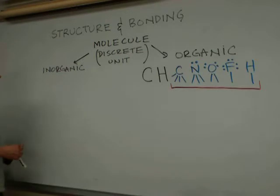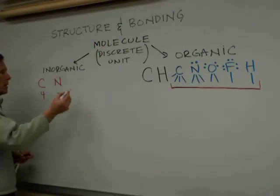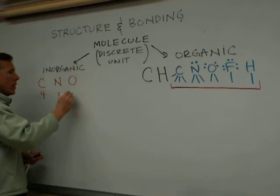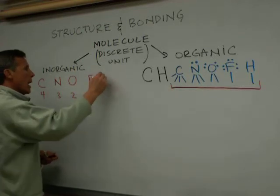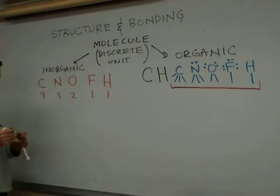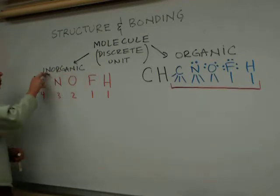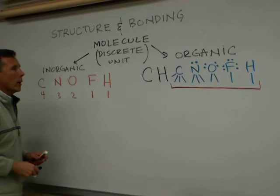For inorganic structures, we'll discover that carbon will always get four bonds, nitrogen would prefer three, oxygen would prefer to have two, fluorine would always want one, and hydrogen would always want one bond in a molecule that's inorganic. Inorganic molecules are any substance that are not organic.